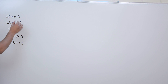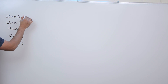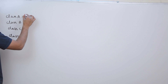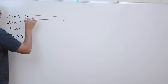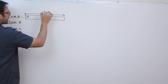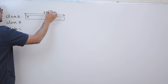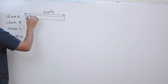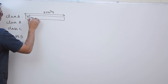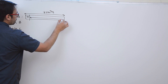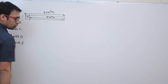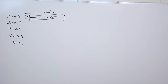In case of class A, the first bit is fixed as 0. Out of the complete 32 bits, the first bit is fixed as 0, and the remaining 31 bits are left.